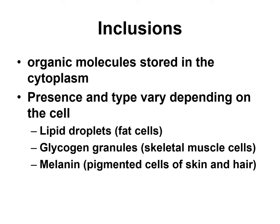In the cytoplasm you find inclusions and organelles. Inclusions are organic molecules which are stored in the cytoplasm. Not all cells have inclusions, and the types depend on what type of cell you are observing. For example, fat cells — adipocytes — store lots of fat, and so in the cytoplasm of fat cells you'll find large lipid droplets. Those are inclusions.